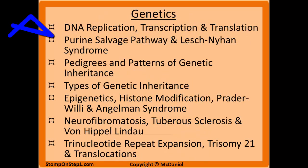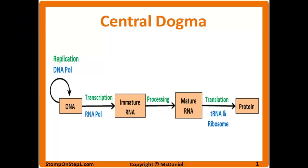This is the first of seven videos in my genetics section, so make sure you check out the rest of these when you're done with this one. We will start with the central dogma of molecular biology, which is the underlying principle of how we get from DNA to protein that actually affects the body and makes up most of the dry mass of the human body.